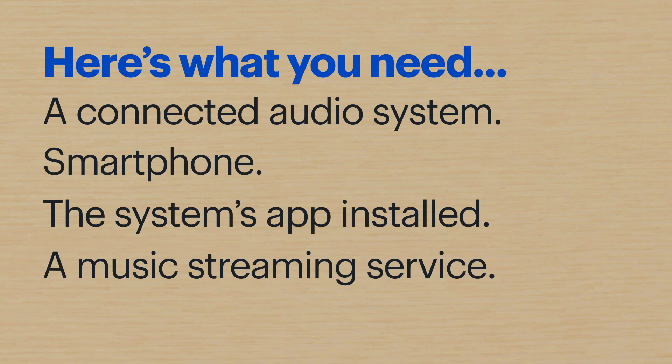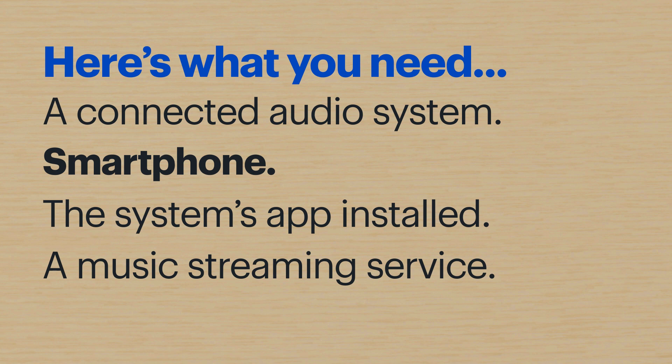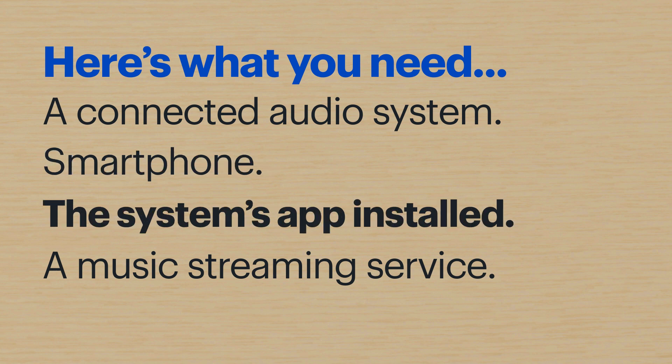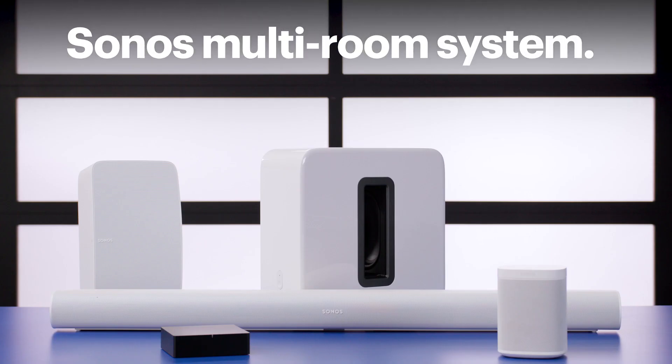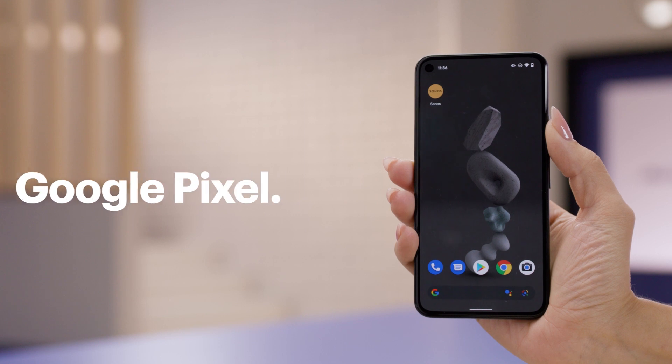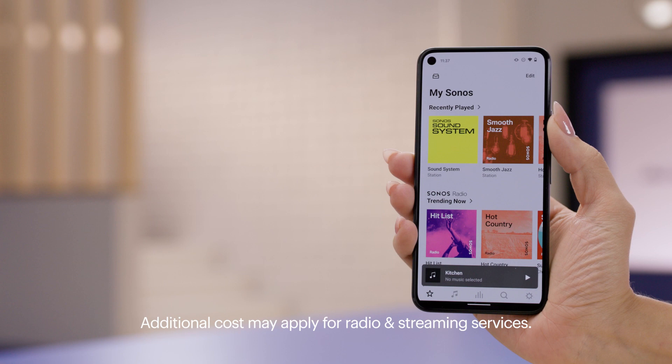Hi, I'm Agent Taylor, and today I'm going to show you how to group connected audio speakers. Here's what you'll need: a connected audio system already set up, a smartphone, the system's app installed and properly configured, and a compatible music streaming service. I'll be using the Sonos multi-room system along with the Google Pixel smartphone and the Sonos app. We'll be streaming music using the Sonos Radio music service, but you could use a different streaming service as well, so the steps might be a little different depending on your devices and services.